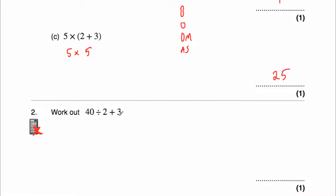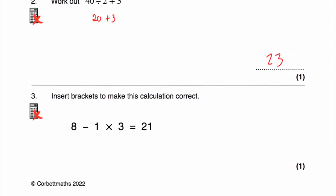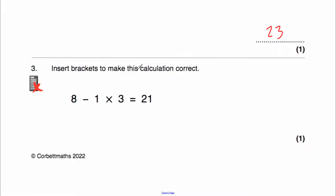Question 2: work out 40 divided by 2 plus 3. With our order of operations — no brackets, no orders — we do have a division, so we're going to do 40 divided by 2, which is 20. Then we still have add 3, so 20 plus 3 is 23. Our answer is 23. It's important to do the division before the addition.